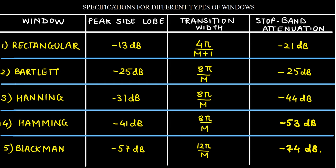For the Hanning window, the peak side lobe is −31 dB, the transition width is 8π/M, and the stop band attenuation is −44 dB. The Hamming window has a peak side lobe of −41 dB, a transition width of 8π/M, and stop band attenuation of −53 dB. For the Blackman window, the peak side lobe is −57 dB, the transition width is 12π/M, and the stop band attenuation is −74 dB.